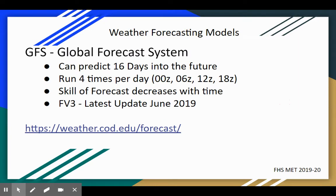Here are the different weather models we'll discuss in class — you'll become familiar with these and use them to predict the weather. The first one is called the GFS, which stands for the Global Forecast System. A few key things to know about each model: how far out they can predict, when they run, and what models are best for short-term versus long-term forecasting. The GFS can predict 16 days out into the future.